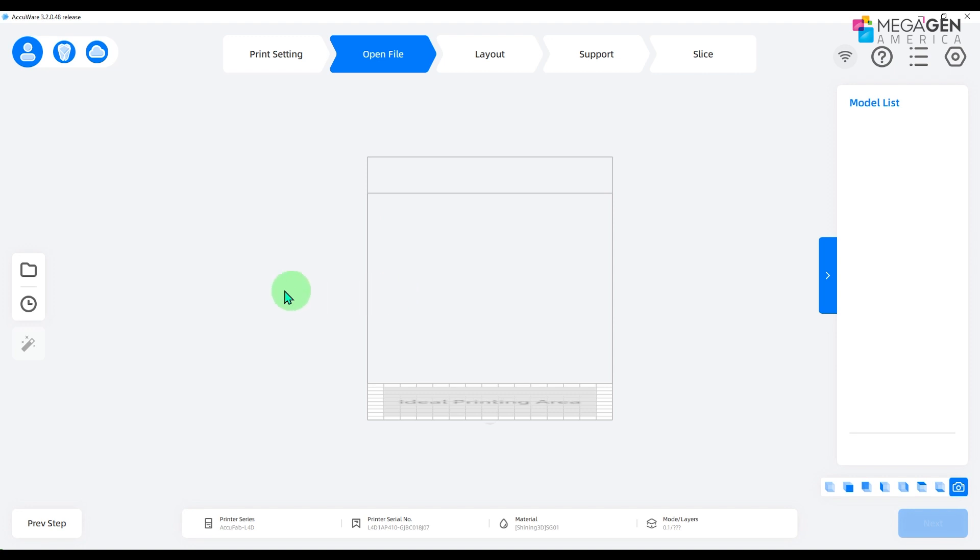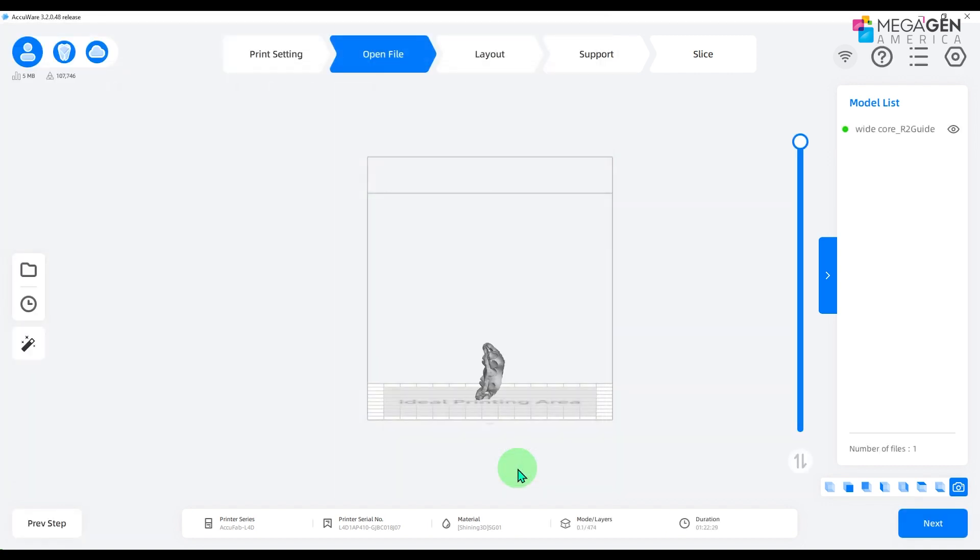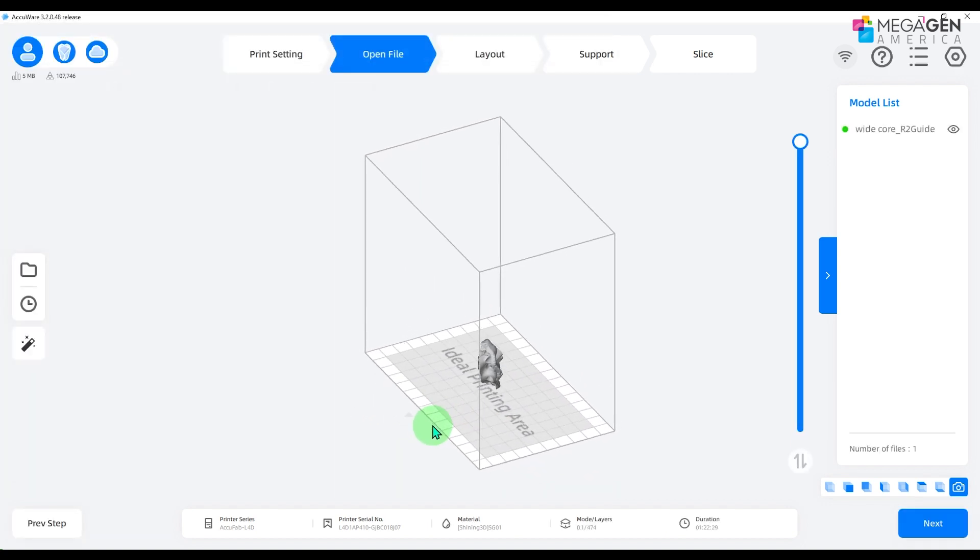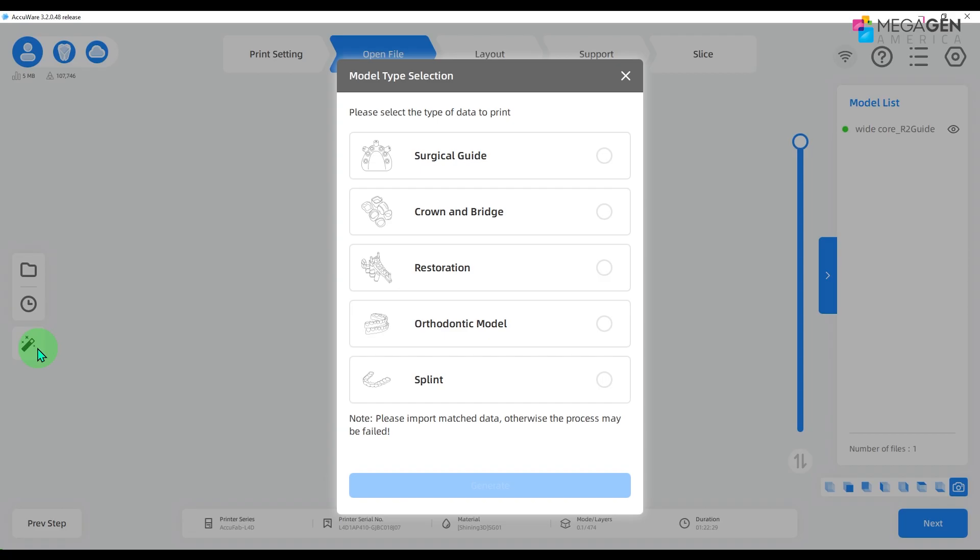Go to open file at the top and choose the folder icon on the left. Bring the STL file of the surgical guide and click on the magic wand icon on the left. That will automatically place the supports for you to proceed with printing.